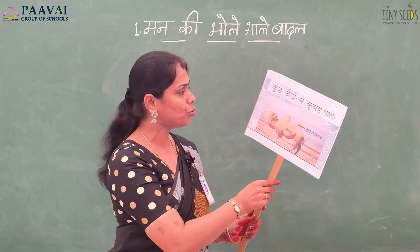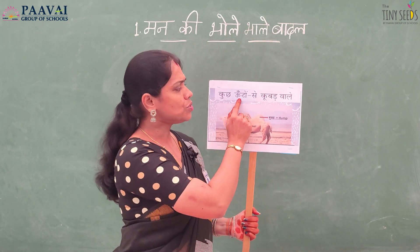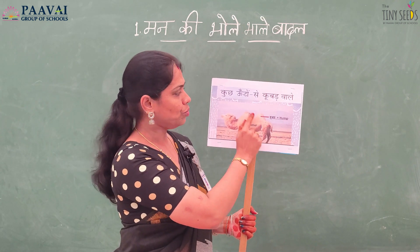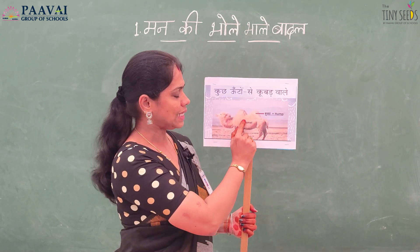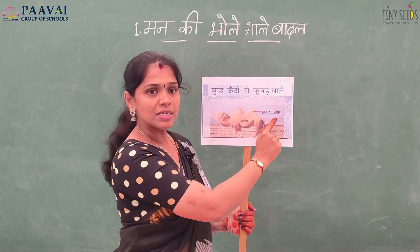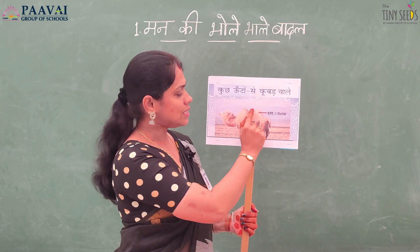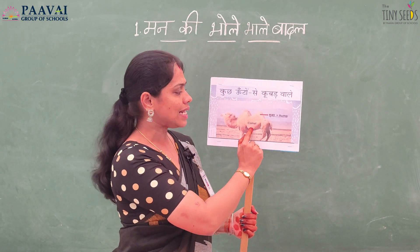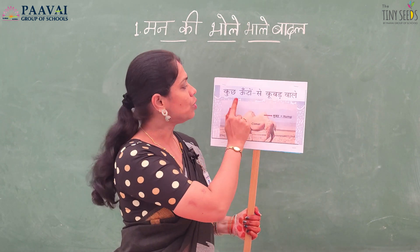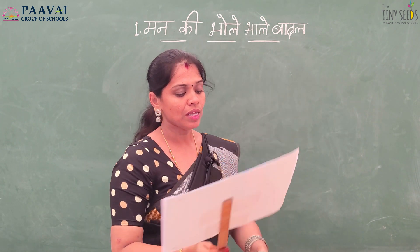Kuchh unto se koobad wale. What is unto? Unto hai camel — unto means camel. Koobad ka matlab hai hump. So some clouds in the sky look like the shape of the hump of the camel. Kuchh unto se koobad wale.